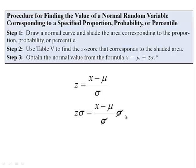So if we multiply both sides by sigma, these sigmas cancel, and we're left with z times sigma equals x minus mu. And the last step is we want to add mu to both sides. And when we add mu to both sides, we get this formula: x is the mean plus z-score times the standard deviation.